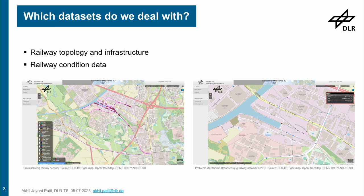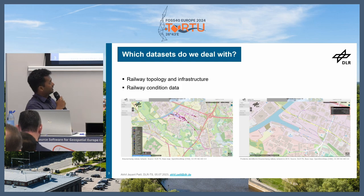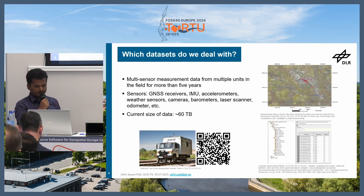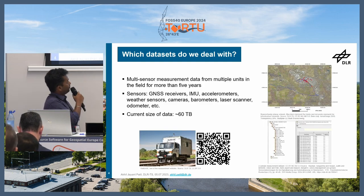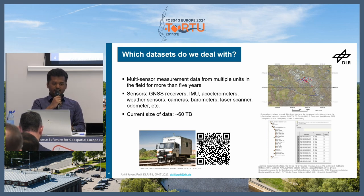On the image you can see this is the map of the Hafenbahn, which is the port of Braunschweig. It's a tiny port, but we have units that run across this small rail network. These units are mounted with different kinds of sensors. So what types of data do we deal with? Mostly, if it is not the network data, then it is generally sensor data.